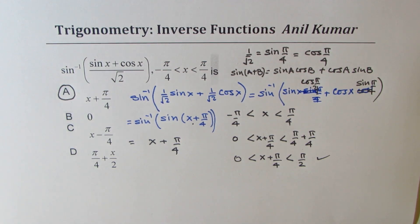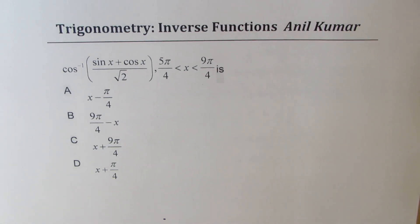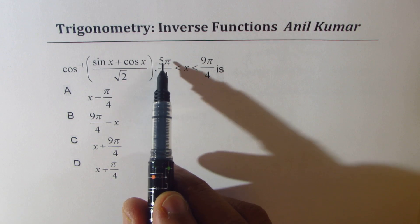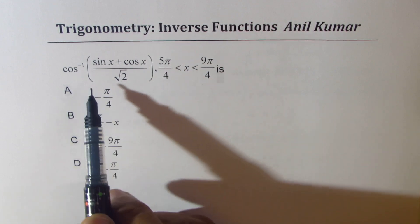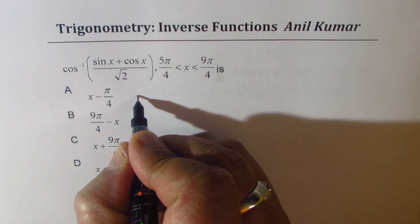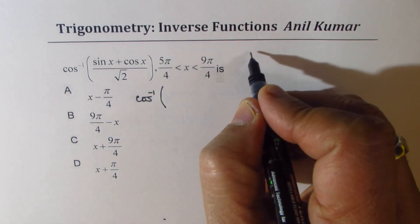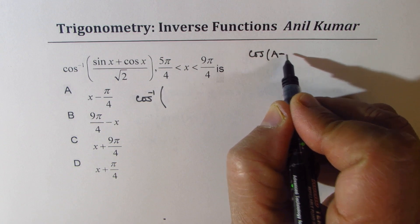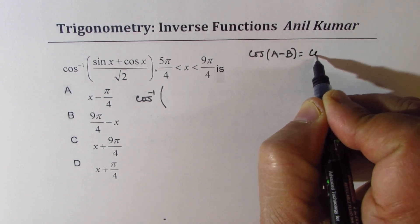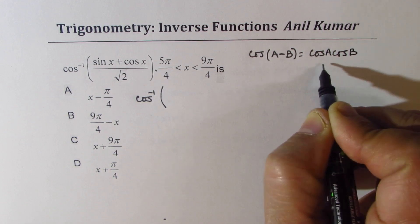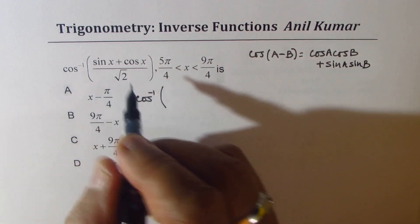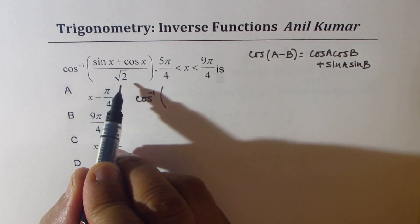Now let's take the other part with the cosine function. It looks similar; however, note that x is between 5π/4 and 9π/4. Using the same strategy, we write this as cos inverse of — and recall that cos(A − B) = cos A · cos B + sin A · sin B.